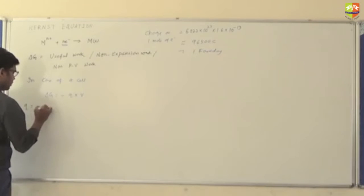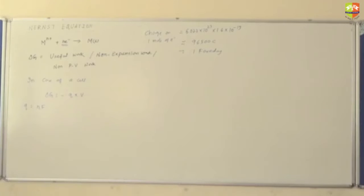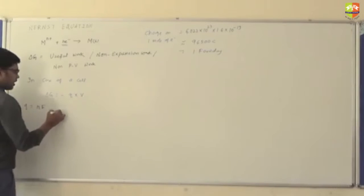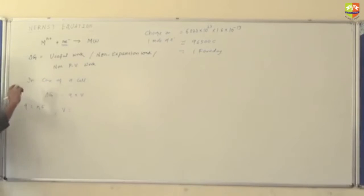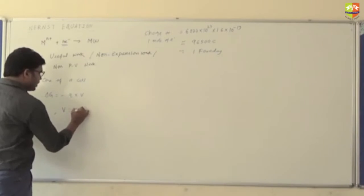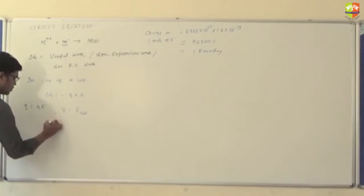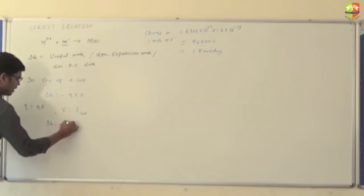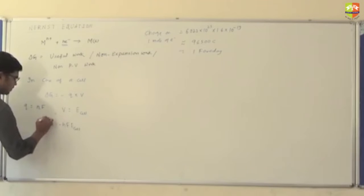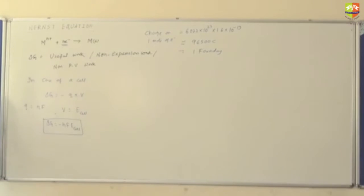So Q is equal to nF. But in case of the cell, what is the potential difference? The EMF of the cell. Potential difference is nothing but the EMF of the cell, because of that only the charge is going. So V is nothing but the EMF of the cell. When we substitute these, delta G becomes minus nFE. This is the form of delta G in an electrochemical cell.